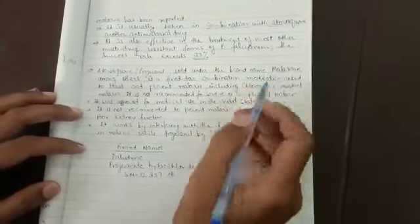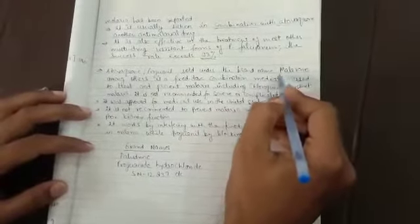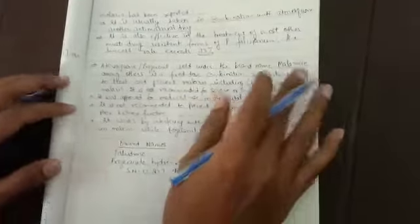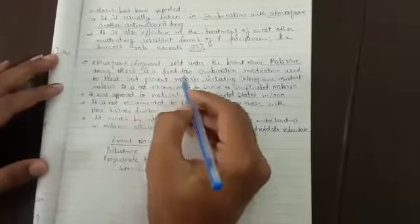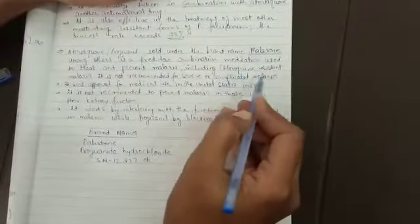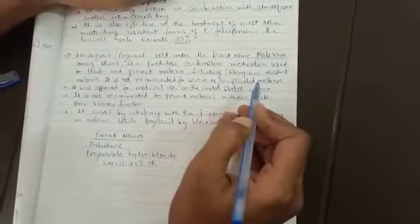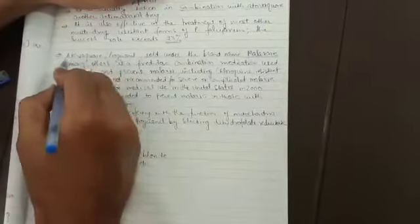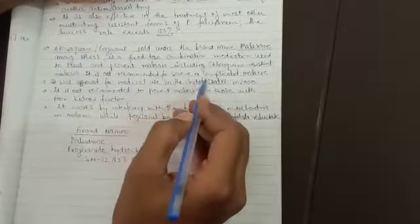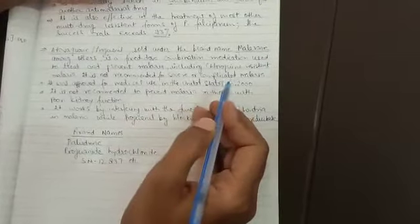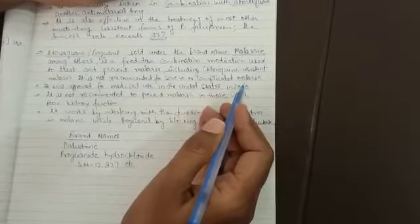Atovaquone plus proguanil, sold under brand name Malarone among others, is a fixed-dose combination medication used to treat and prevent malaria, including chloroquine-resistant malaria. It is not recommended for severe and complicated malaria cases.